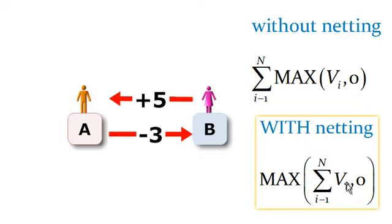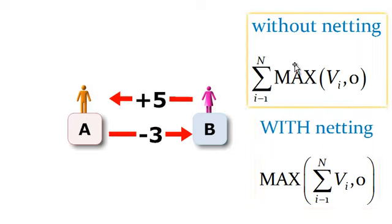With netting, notice the difference here. We max out the summation and then the zero. And so in this case, if there is netting, five minus three is positive two. With netting, the potential loss has been reduced from five to two because if counterparty B defaults, then counterparty A can net the three that's out of money against the five. And it's only going to lose the two that it was net in the money.